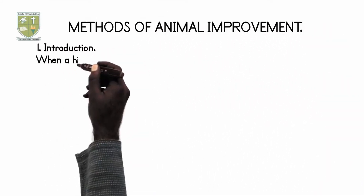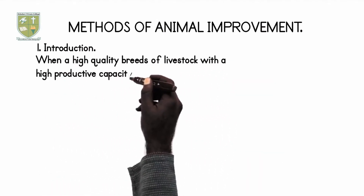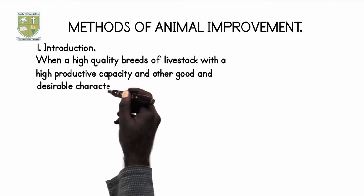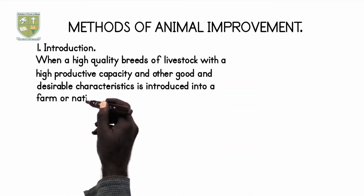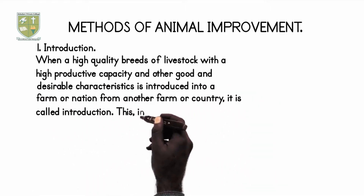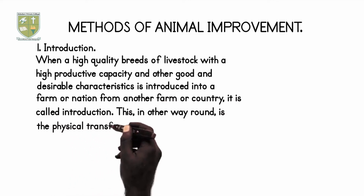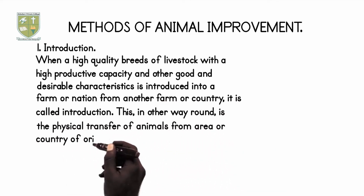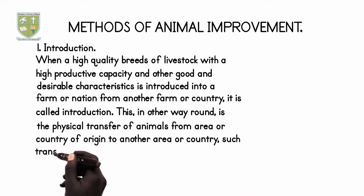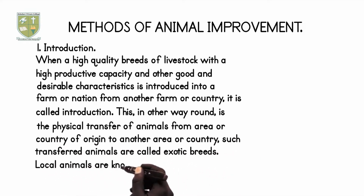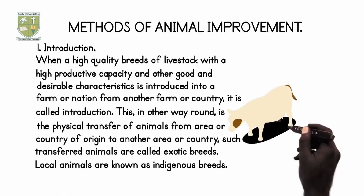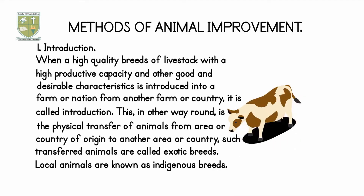Methods of Animal Improvement. The methods of animal improvement are listed below. 1. Introduction: When a high quality breed of livestock with a high productive capacity and other good and desirable characteristics is introduced into a farm or nation from another farm or country, it is called introduction. This is the physical transfer of animals from an area or country of origin to another area or country. Such transferred animals are called exotic breeds, while local animals are known as indigenous breeds.